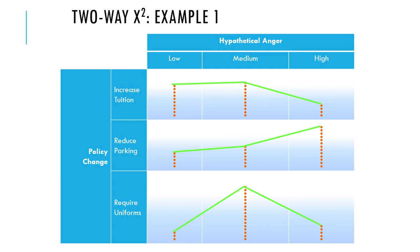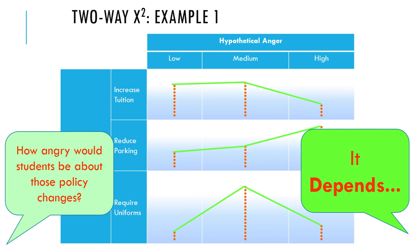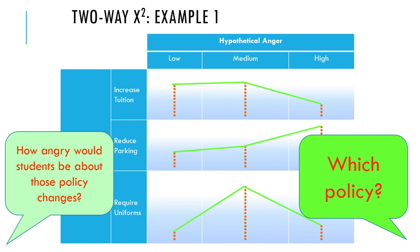How angry would students be about those policy changes? It depends — which policy? That word 'it depends' captures real statistical dependence between the hypothetical anger variable and the which-policy variable. For increasing tuition, a lot of students would be moderately angry but very few extremely angry. For reducing parking, a lot would be extreme anger. For requiring uniforms, a lot of medium anger. When someone asks what's the value of the anger variable, you have to say it depends on what the value of the policy variable is.